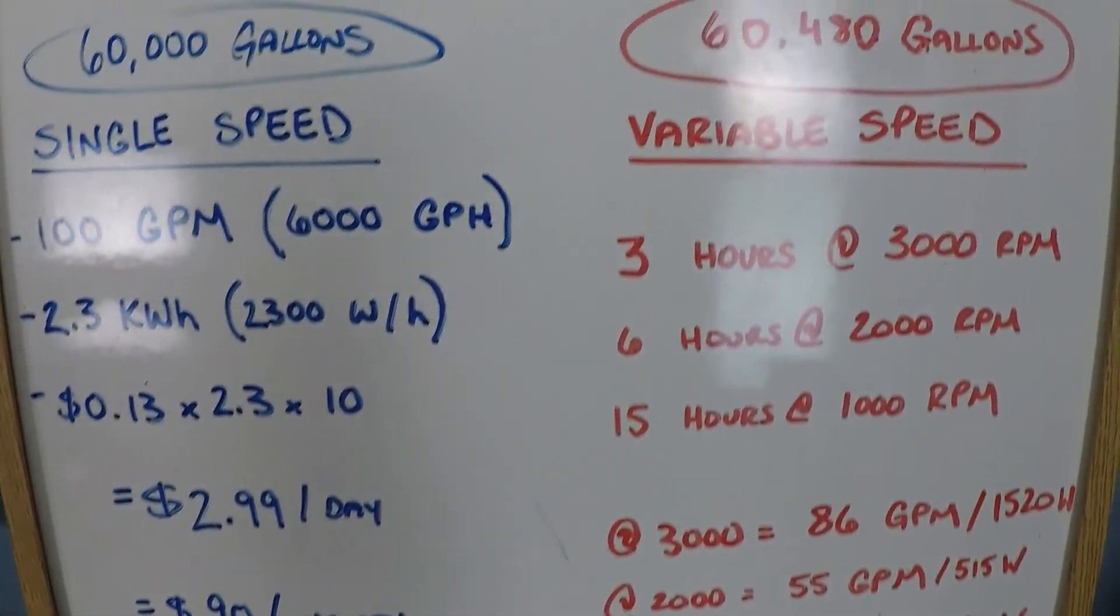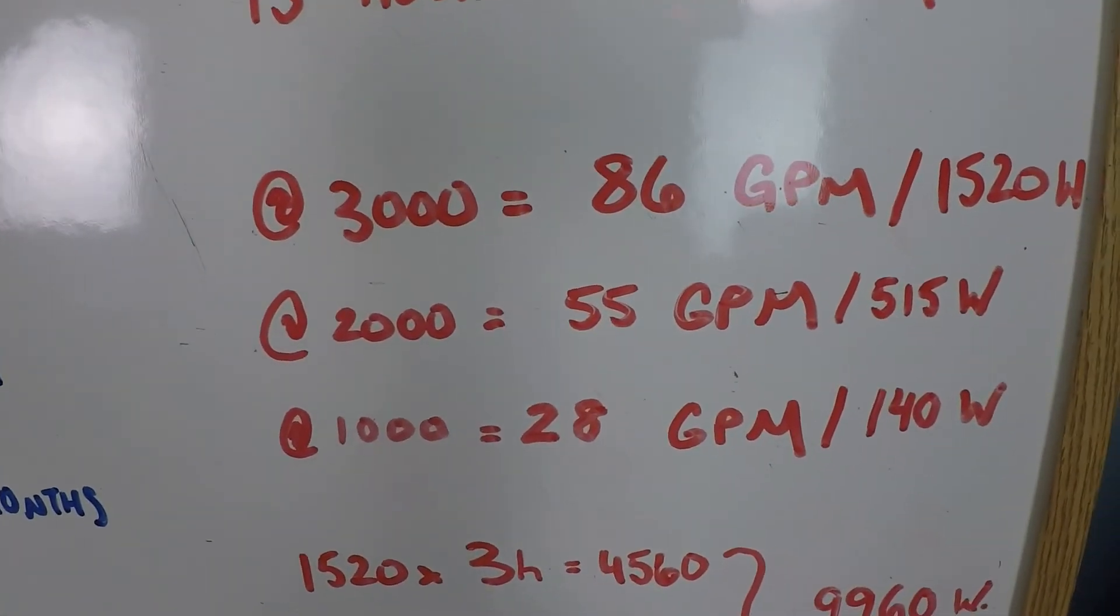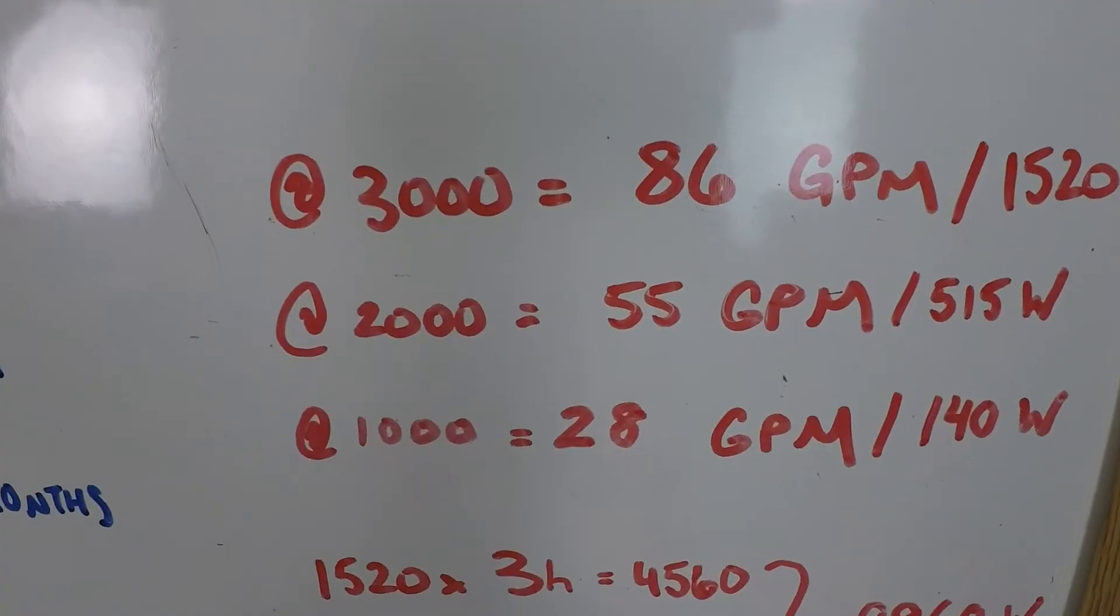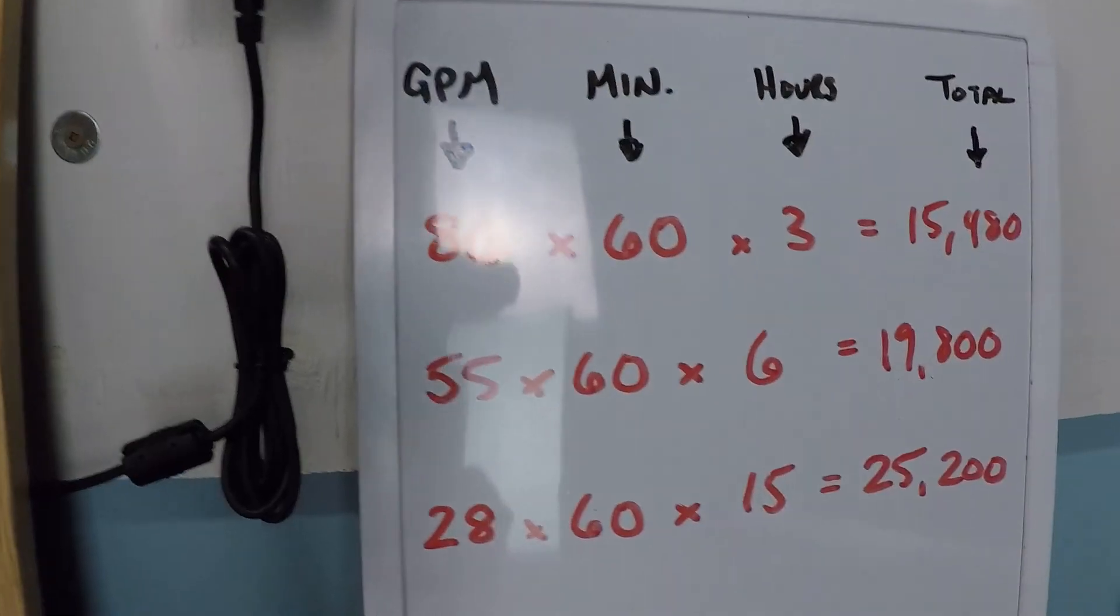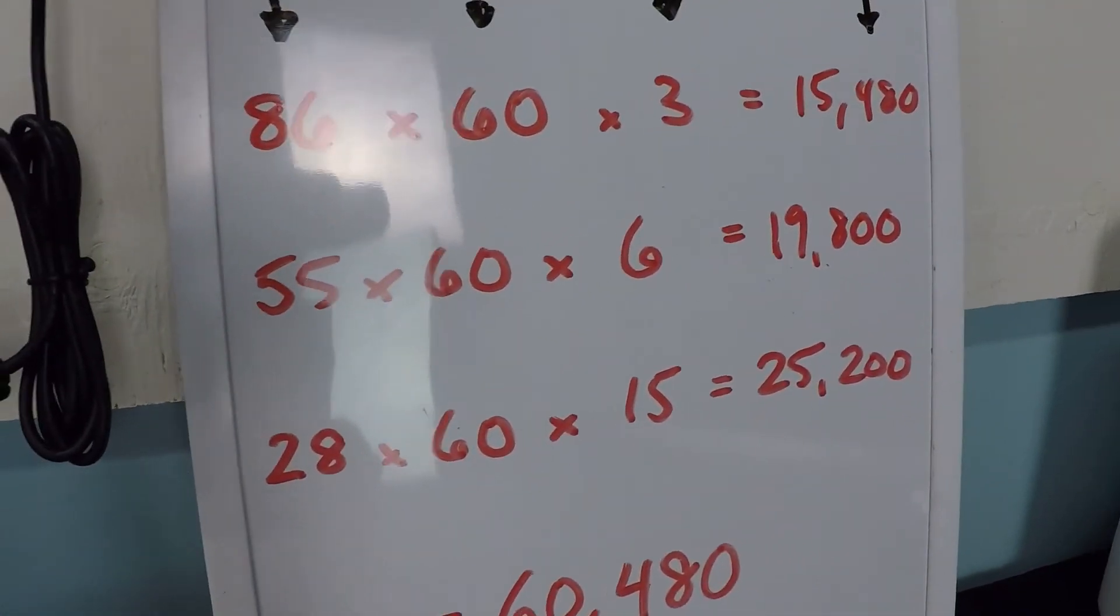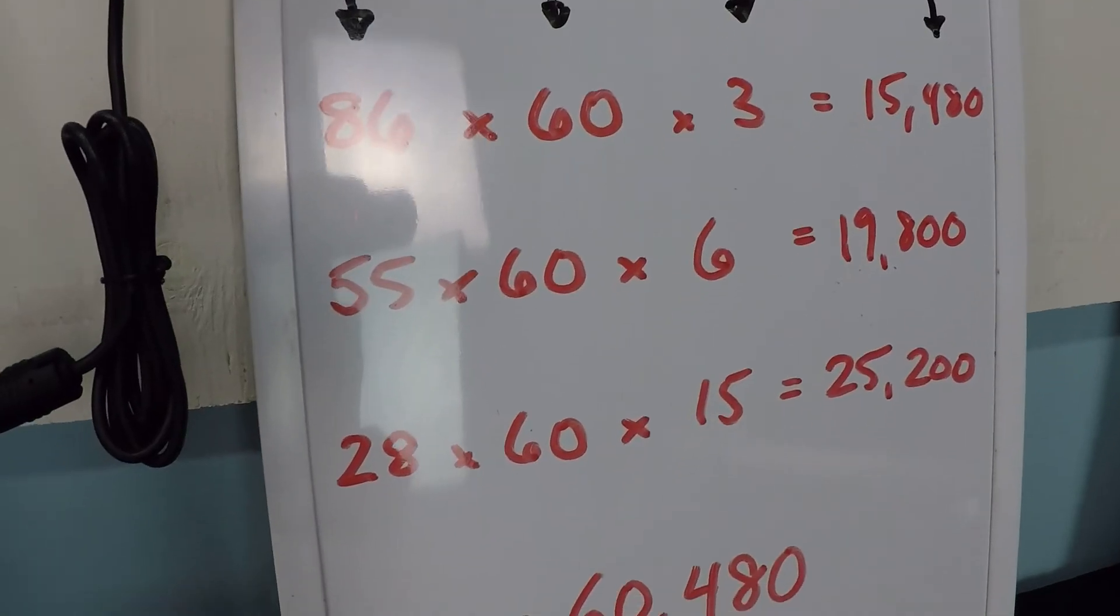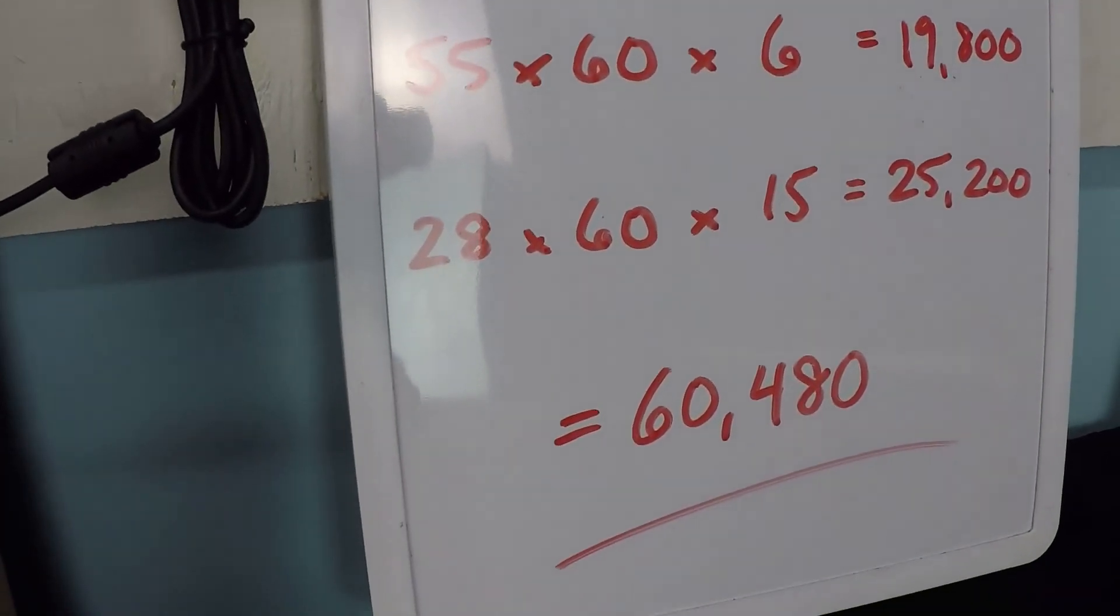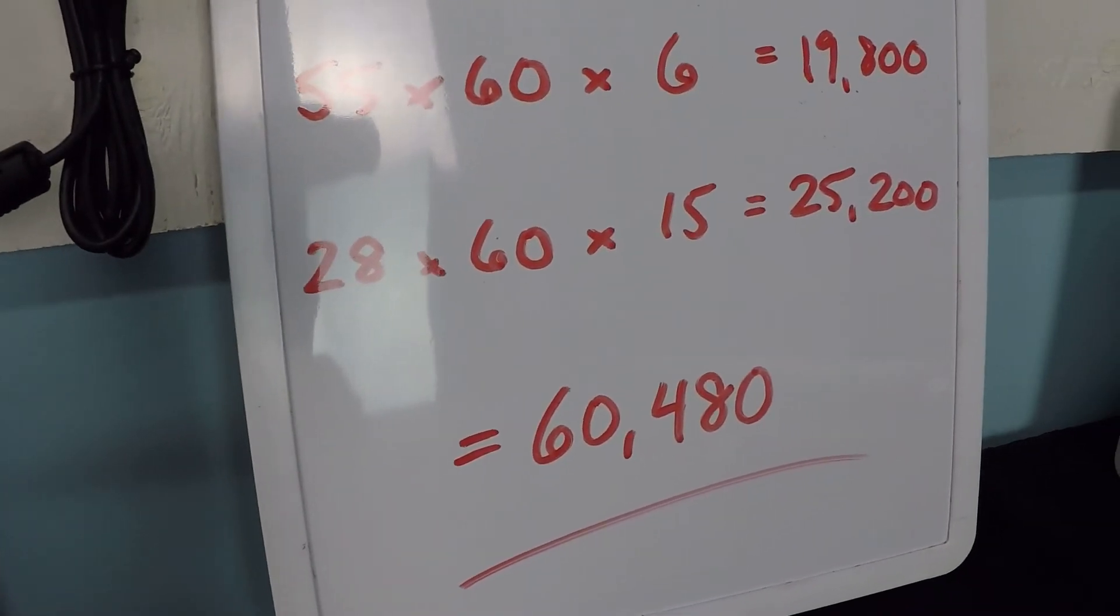And because you might be interested in seeing the calculations behind this, what are we getting here? For three hours, we had 86 gallons per minute, and then for six hours, we had 55, and then for 15 hours, we had 28. So here are those numbers here as well. In the three-hour high-speed schedule, we got 15,000 gallons, whereas in the 15 hours at low speed, you got 25,000 gallons.